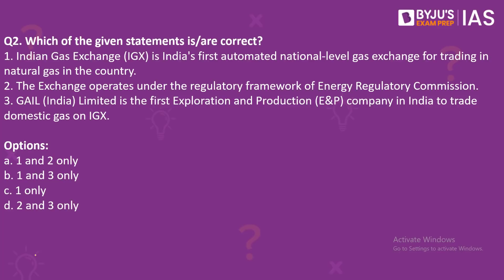Moving on to question number 2: which of the given statements is or are correct? Number 1: Indian Gas Exchange is India's first automated national level gas exchange for trading in natural gas. Number 2: The exchange operates under the regulatory framework of the Energy Regulatory Commission. Number 3: ONGC India Limited is the first exploration and production company in India to trade domestic gas on IGX.